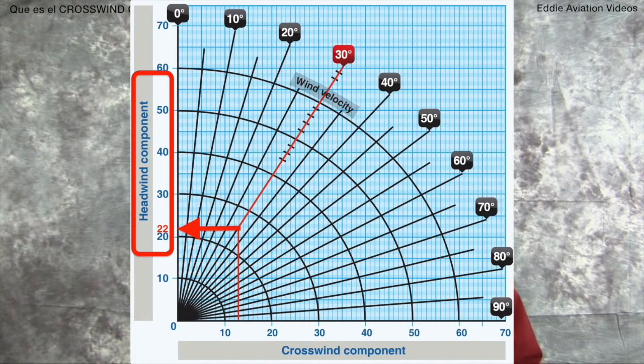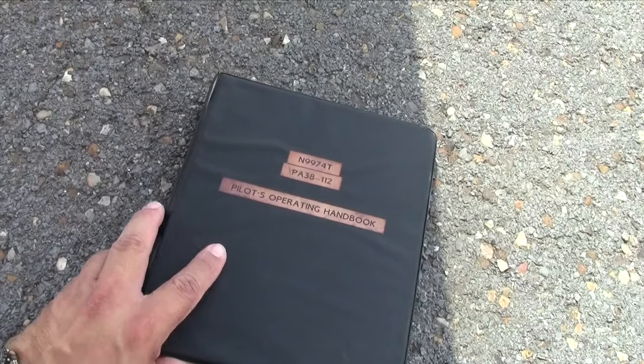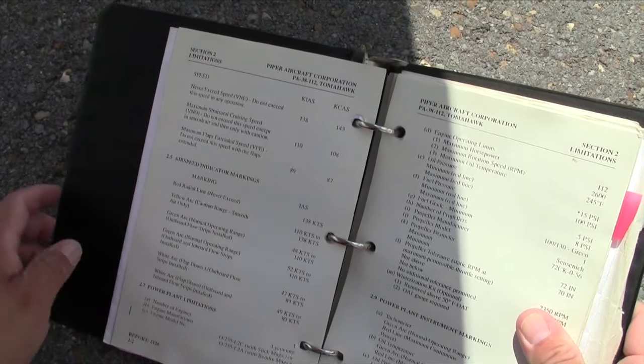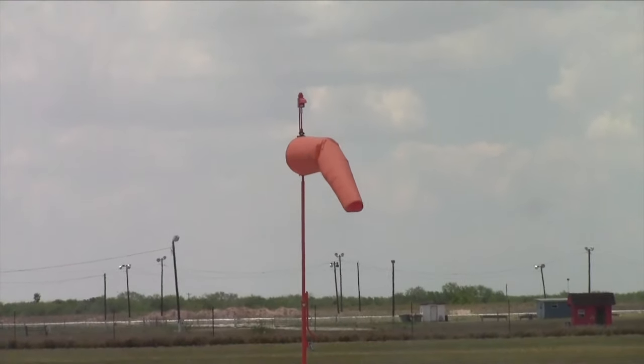Hay una línea más que podrías trazar a la intersección de los 30 grados de ángulo del viento y 25 nudos de la velocidad del viento. Y si la trazas recto hacia la izquierda, encontrarás que intersecciona en el número 22, el cual es 22 nudos de Headwind Component, el cual te servirá en otras calculaciones. Así que, en este ejemplo, tendrás que aterrizar o despegar en la pista 1-7 con una dirección de 140 grados en el viento y 25 nudos de velocidad, los cuales te darán 13 nudos del componente del viento cruzado. Con esta información, el piloto deberá de acudir al manual del avión y confirmar que no excede el componente que el fabricante estableció para ese avión en particular, de forma que la aeronave no sea llevada más allá del límite en que fue diseñada.